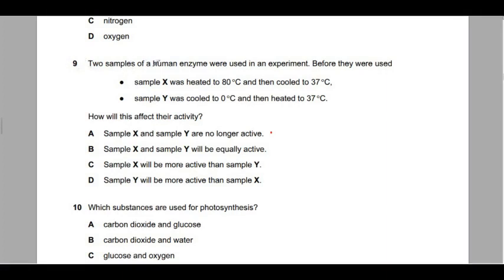Let's get started. Question nine says: two samples of a human enzyme were used in an experiment. Before they were used, sample X was heated to 80 degrees Celsius then cooled to 37 degrees Celsius. Sample Y was cooled to zero degrees then heated to 37 degrees Celsius.